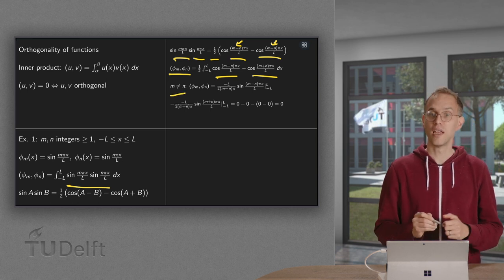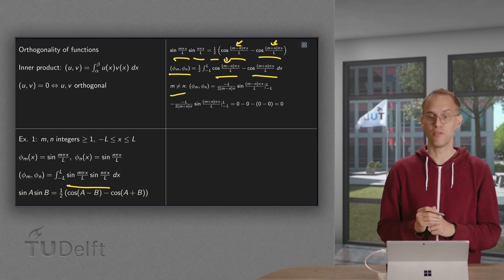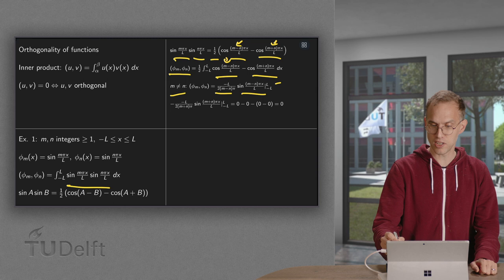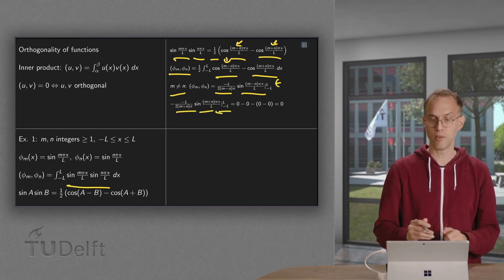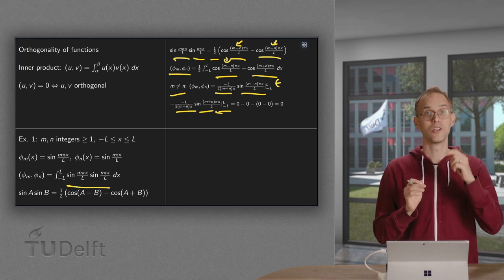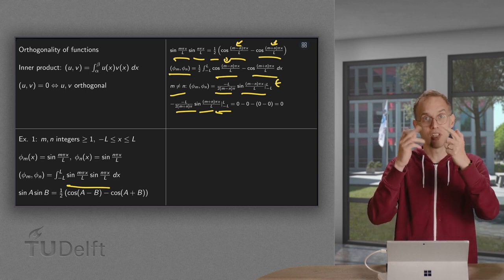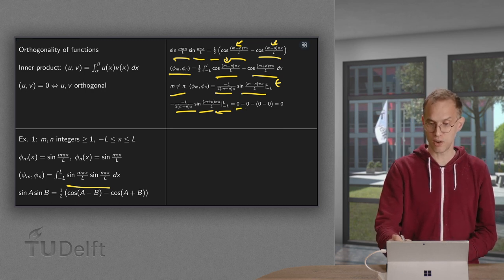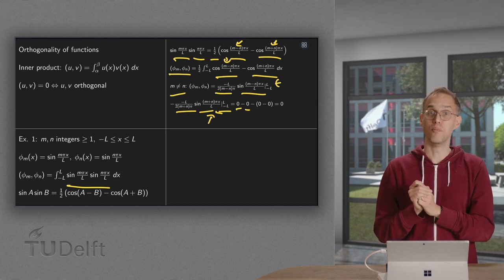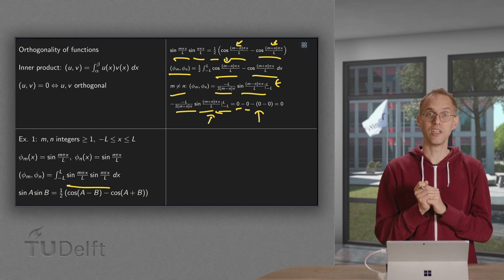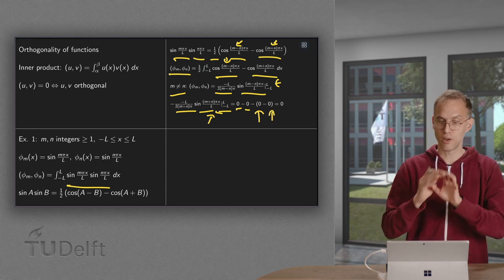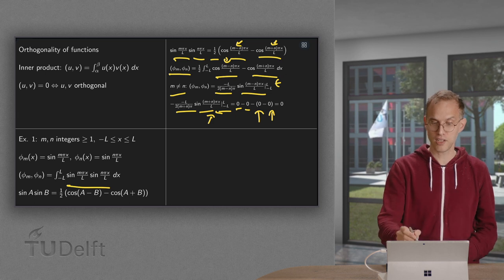First, we do m not equal to n. If m is equal to n, we have to be a bit careful because then we have zero over there. But if m is not equal to n, we can just compute both antiderivatives. We get a sine with some terms between minus l and l and another sine with some terms between minus l and l. If you put in the upper boundary, you get sine((m minus n)*pi*l/l), which is sine of a multiple of pi, which is zero. Same for the lower boundary. We get zero minus zero. And the other term, we get sine((m plus n)*pi), again the sine of a multiple of pi equals zero. All terms are zero. So for m not equal to n, this inner product equals zero.